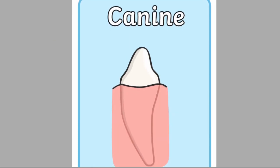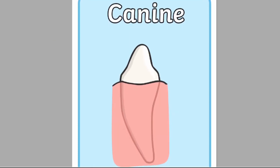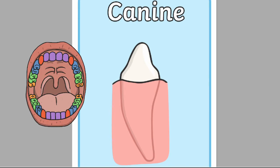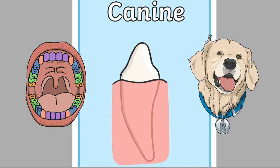Canines are used for ripping and tearing your food. Your canines are on either side of your incisors and you have four of them. The word canine means something connected to dogs. This is because canine teeth are a bit pointy, just like the teeth of a dog or a wolf.